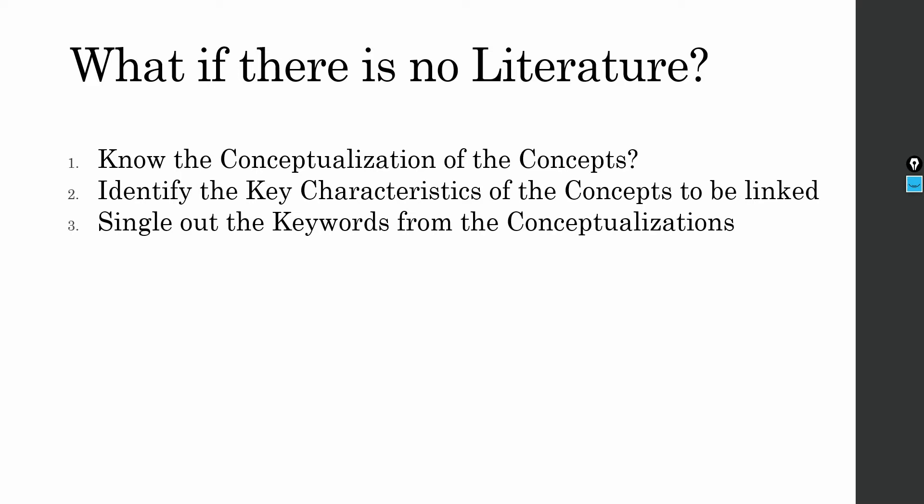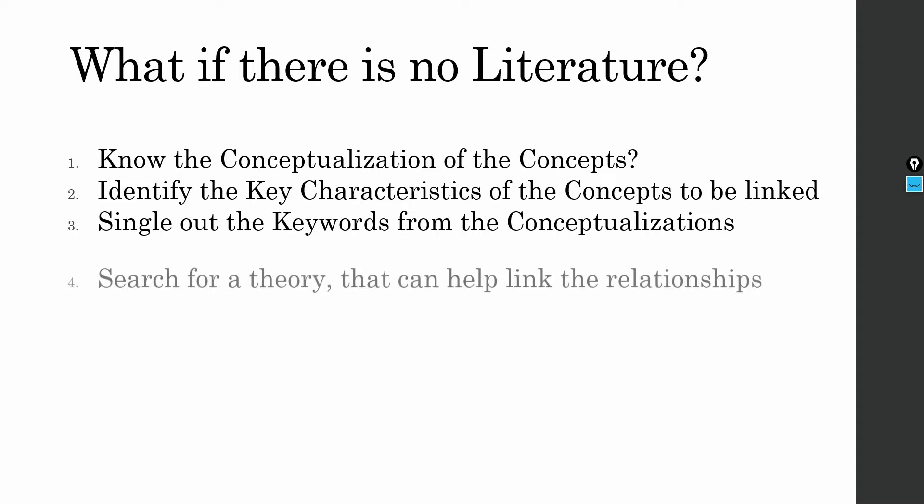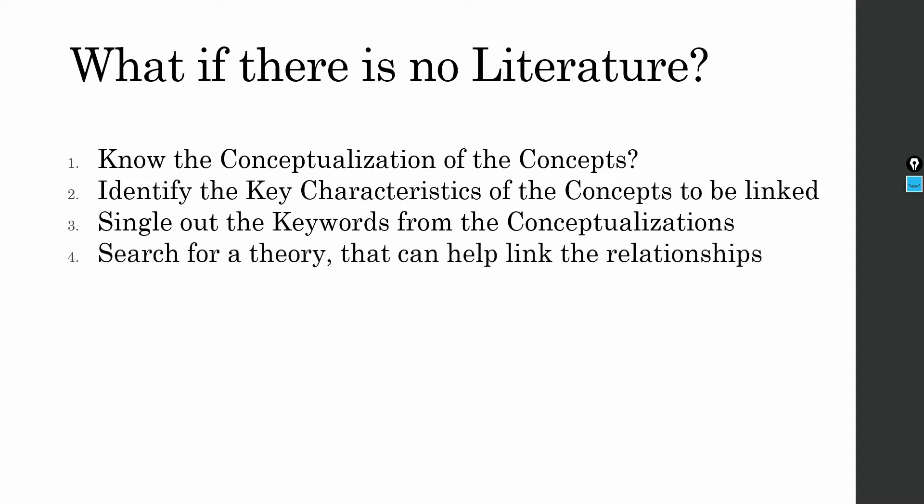Single out the keywords from the conceptualization. In order to identify the key characteristics, you can single out the keywords from those conceptualizations — the definitions that you identify from the literature review. And most importantly, search for a theory that can help you explain the relationships between the concepts. We've done this in detail in previous sessions.